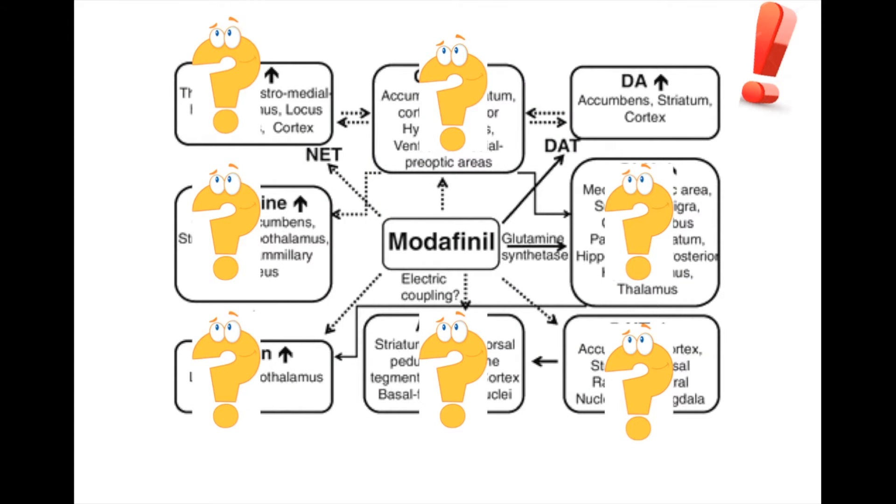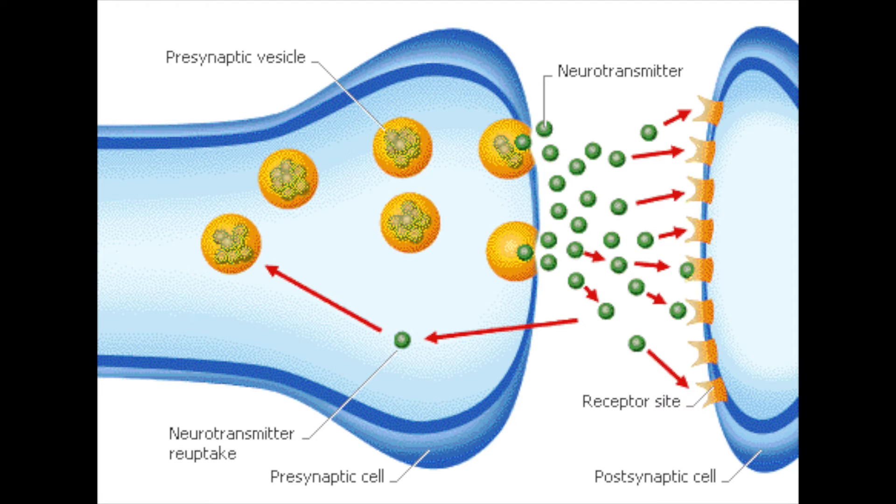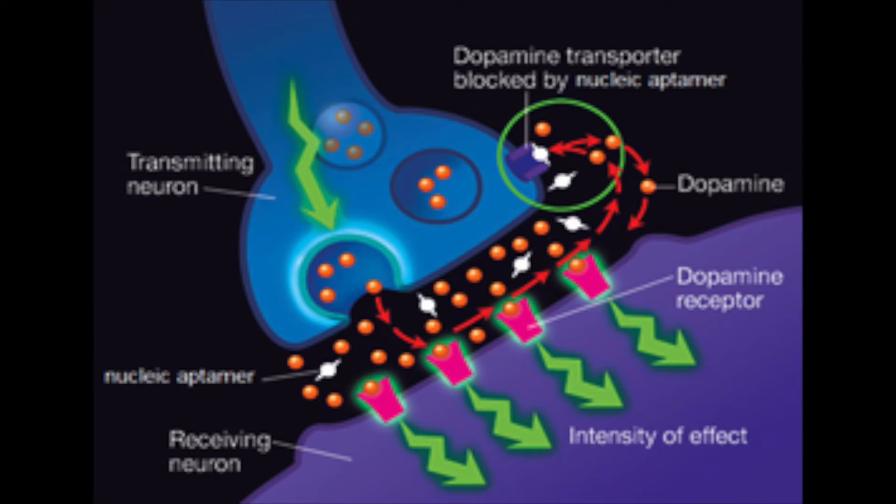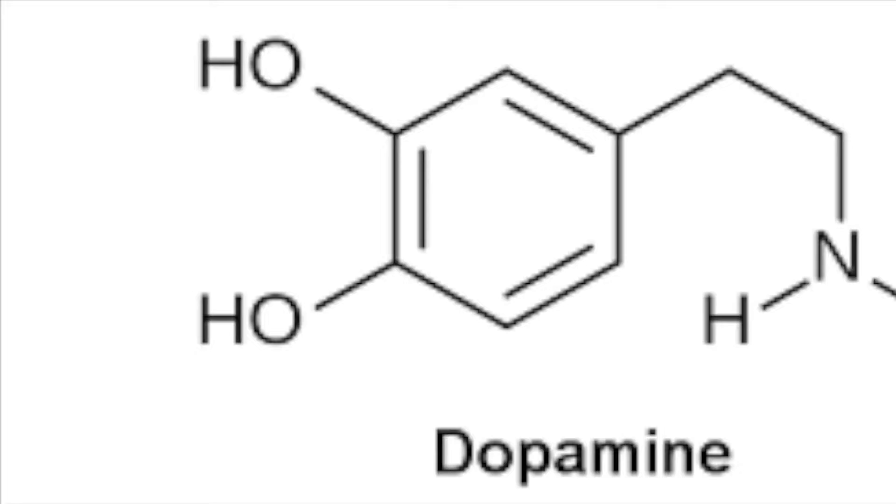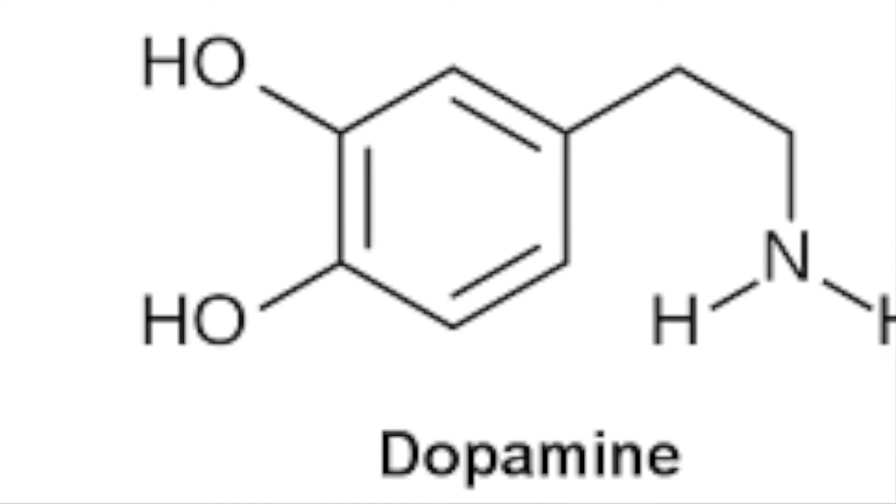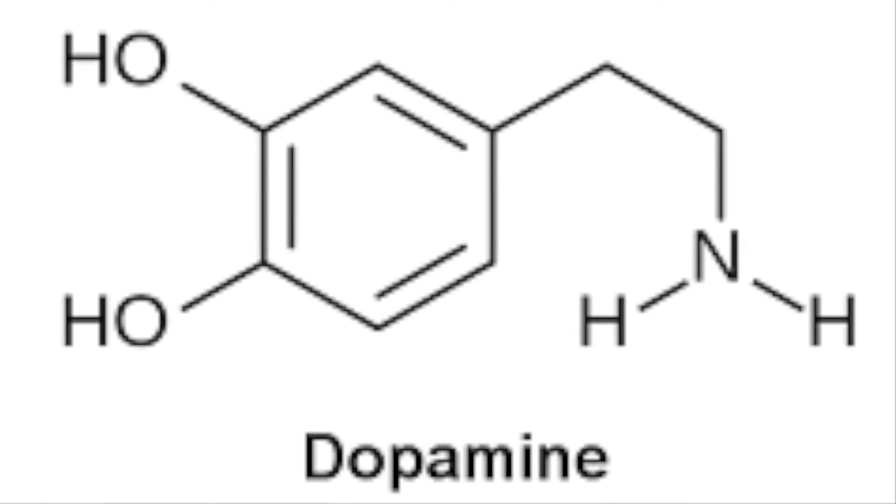While the mechanism of Modafinil is not fully understood, it is known to affect many neurotransmitters through an indirect, unknown route. Yet one known route is how it affects DAT, also known as the dopamine transporter. But before we get into this, it's important to understand what dopamine is and how it functions.